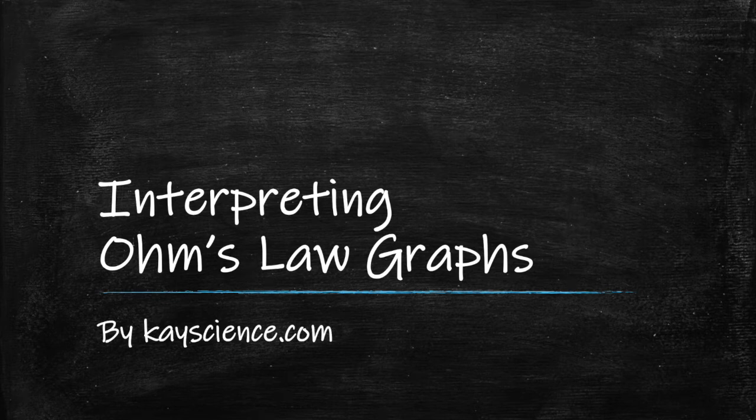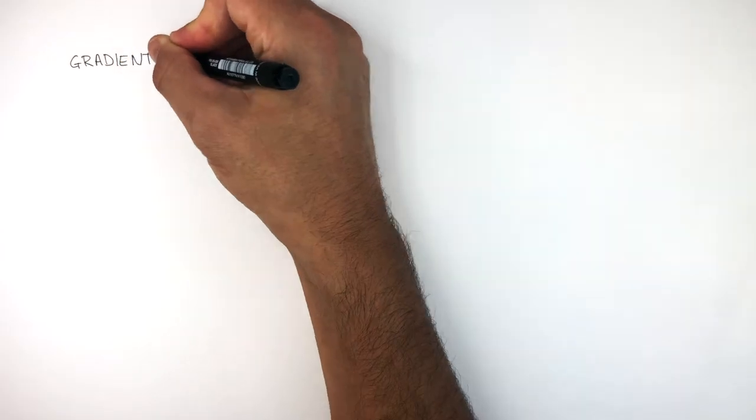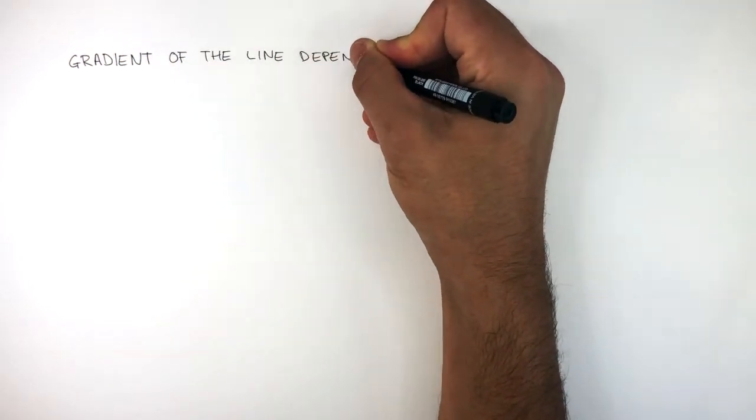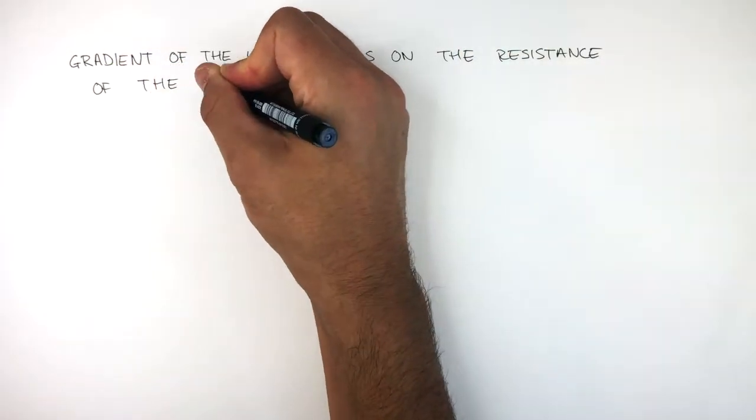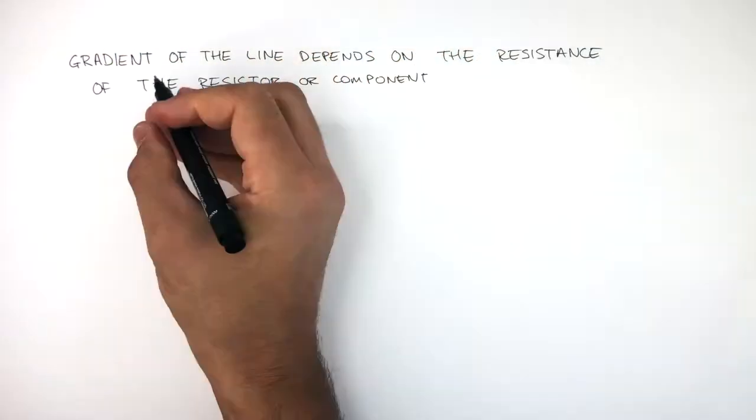Interpreting Ohm's Law Graphs by KScience.com. The gradient of the line depends on the resistance of the resistor or component.